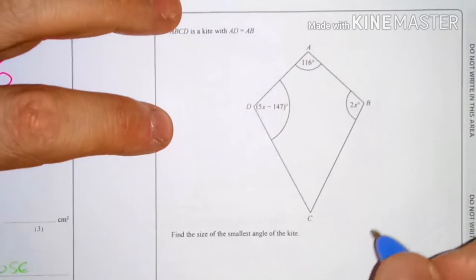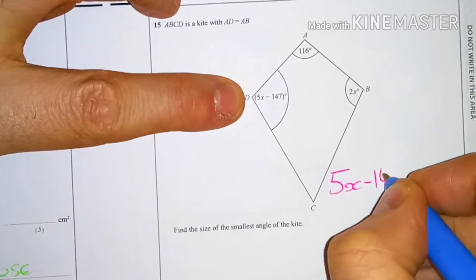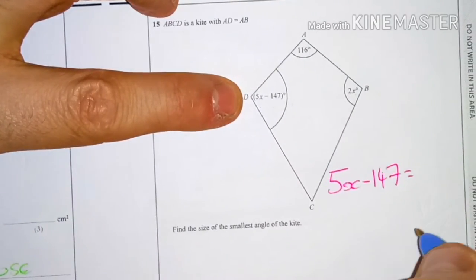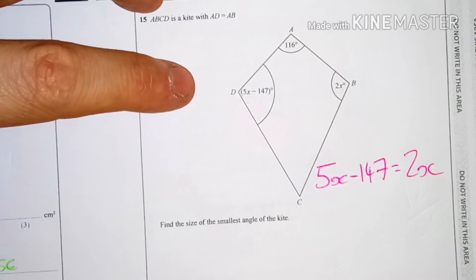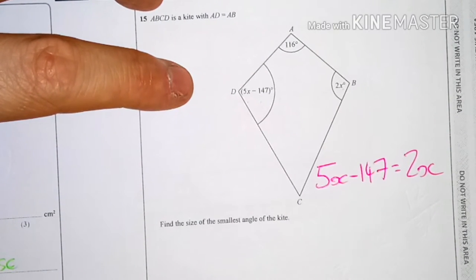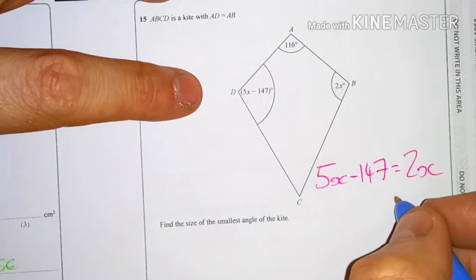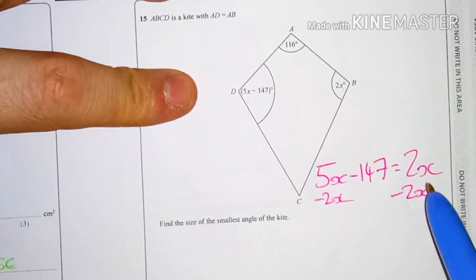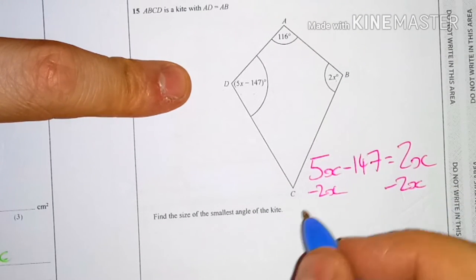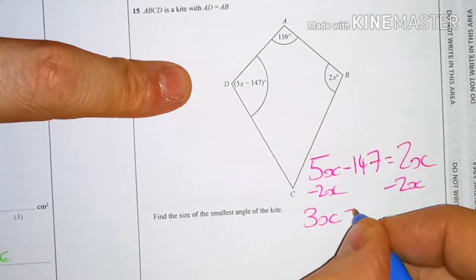So we've got something we can work with now. We know that 5x minus 147 is the same as 2x. Now this is an equation we can solve. To solve it, I need to get my x's on one side and my numbers on the other side. I'm going to minus 2x from both sides because I always like to subtract the lowest number of x's. 5x minus 2x is 3x, and I haven't touched my 147.